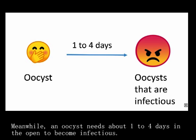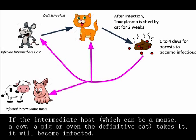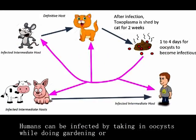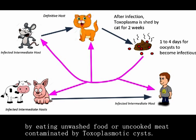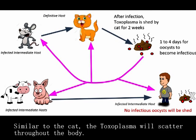Meanwhile, an oocyst needs about 1-4 days in the open to become infectious. If an intermediate host, which can be a mouse, a cow, a pig, or even the definitive cat, takes it in, it will become infected. Humans can be infected by taking in oocysts while doing gardening, or by eating unwashed food or uncooked meats contaminated by Toxoplasma cysts.